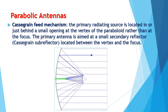Lastly, we have a cassegrain feed mechanism. In a cassegrain feed mechanism, the primary radiating source is located in or just behind a small opening at the vertex of the paraboloid, rather than at the focus. The primary antenna is aimed at a small secondary reflector called a cassegrain subreflector, located between the vertex and the focus. Instead of a concave smaller reflector, we have a convex subreflector, which reflects the electromagnetic waves toward the larger parabolic dish.